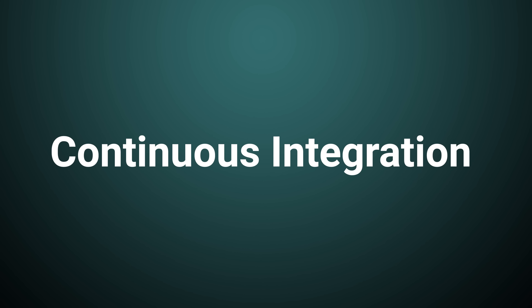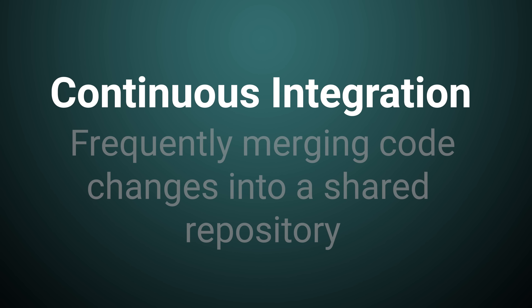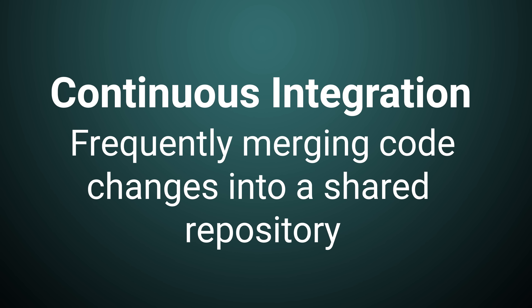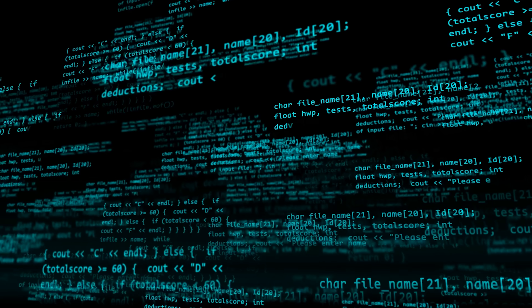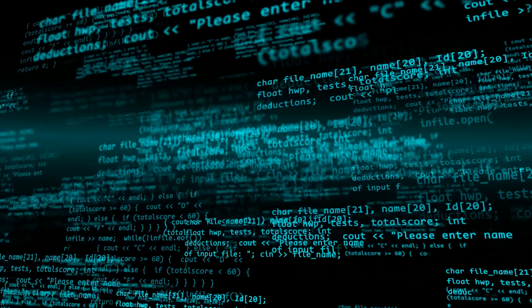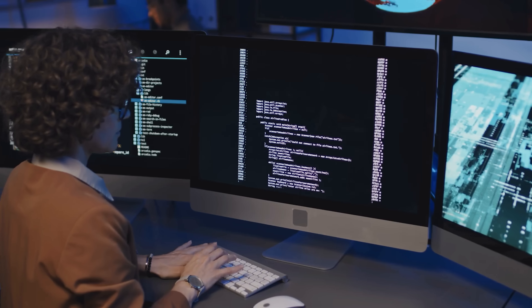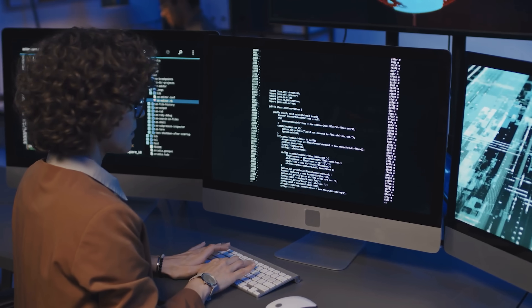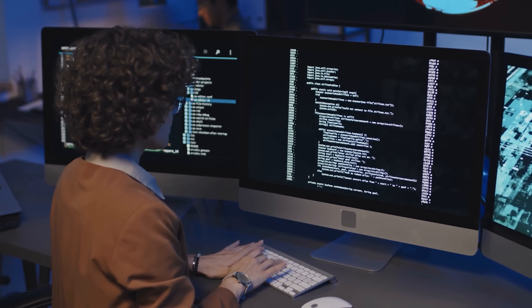First, continuous integration. Continuous integration is the practice of frequently merging code changes into a shared repository. The goal of CI is to detect and resolve any issues that arise due to the integration of code changes early in the development cycle. CI involves using automation tools to build and test the code as soon as it's merged into the shared repository.